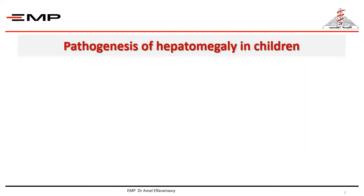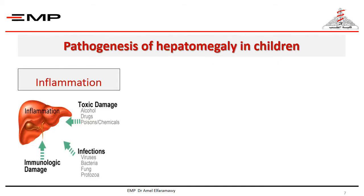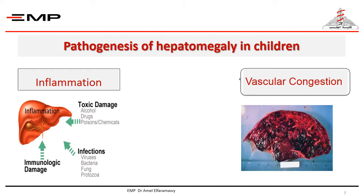Hepatomegaly in children may be due to increase in the size of hepatocytes due to inflammation, as in case of hepatitis — whatever the cause: viral infection, autoimmune, drug-induced, or toxins. It may also be due to increase in the size of the vascular space due to venous congestion, as in case of hepatic venous outflow obstruction, Budd-Chiari syndrome, veno-occlusive disease, or congestive heart failure. These two subjects were explained in the lecture of acute liver disease in children.